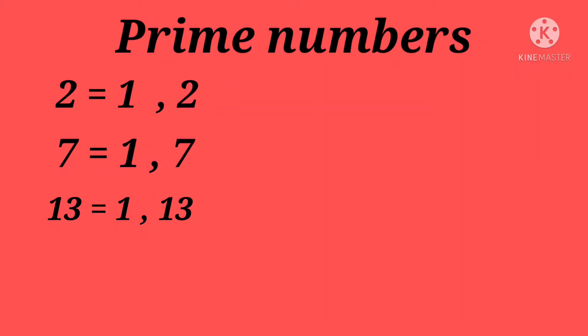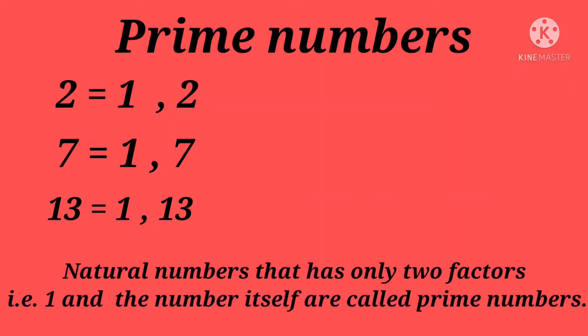All these numbers have only two factors that is 1 and the number itself. So, Prime Numbers are the natural numbers that has only two factors that is 1 and the number itself.